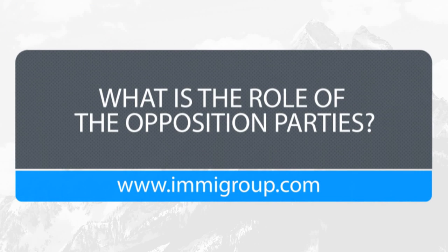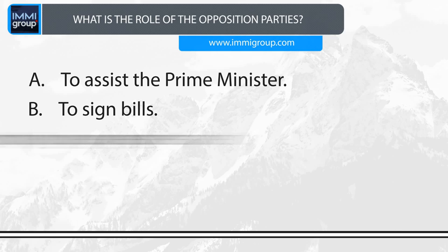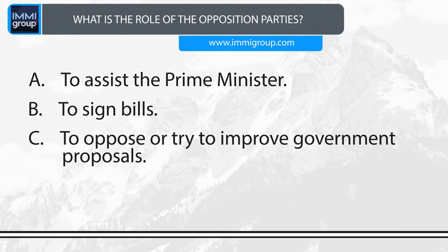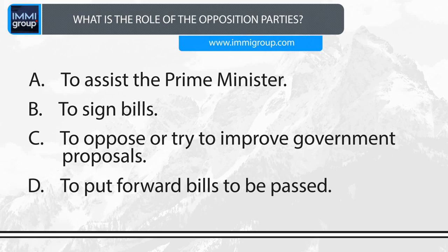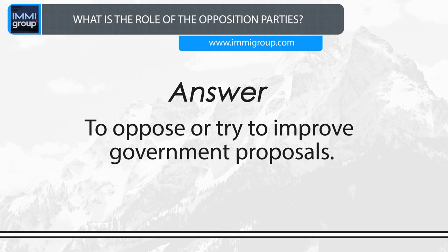What is the role of the opposition parties? A. To assist the Prime Minister. B. To sign bills. C. To oppose or try to improve government proposals. D. To put forward bills to be passed. Answer: To oppose or try to improve government proposals.